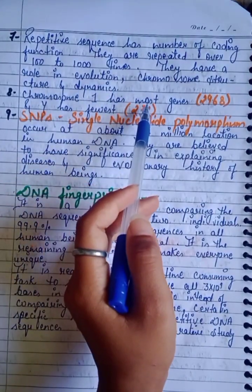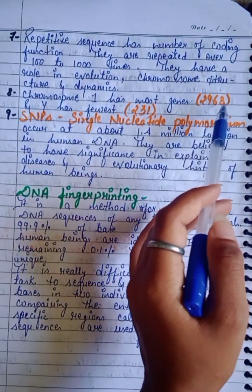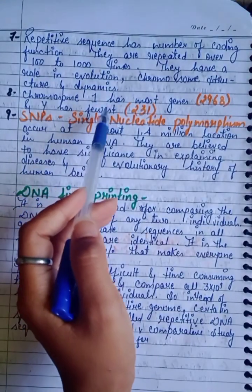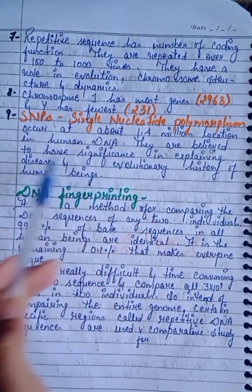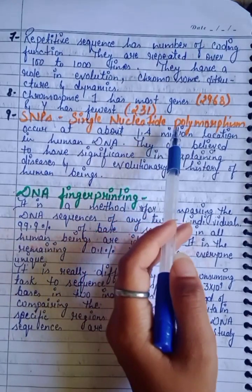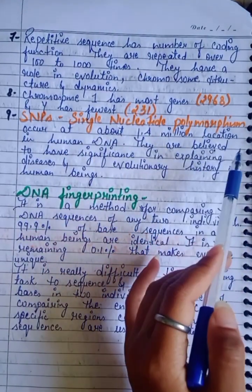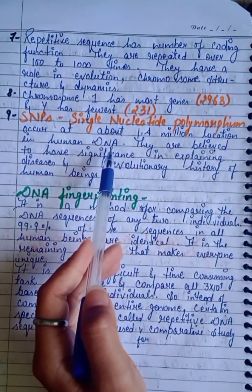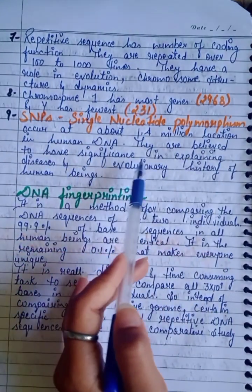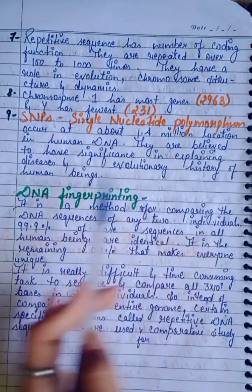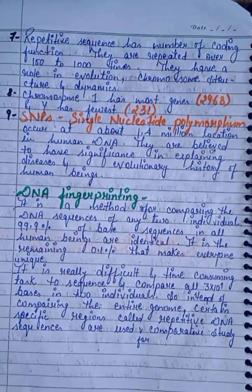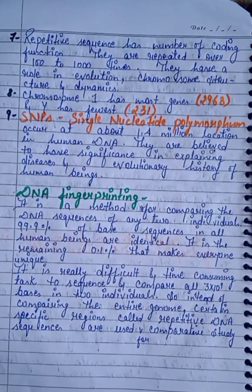Chromosome 1 has the most genes — 2,968 — and the Y chromosome has the fewest genes, i.e., 231. Single Nucleotide Polymorphisms, or SNPs, occur at about 1.4 million locations in human DNA. They are believed to have significance in explaining disease and evolutionary history of human beings.